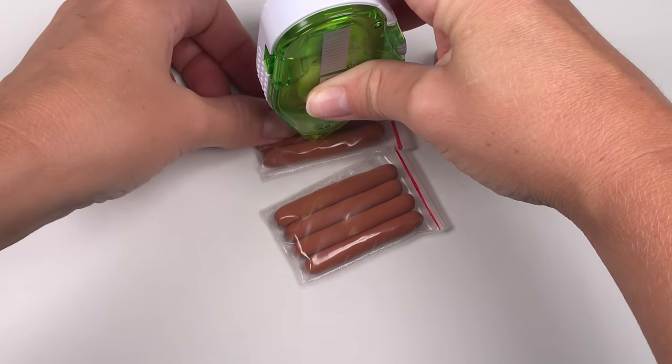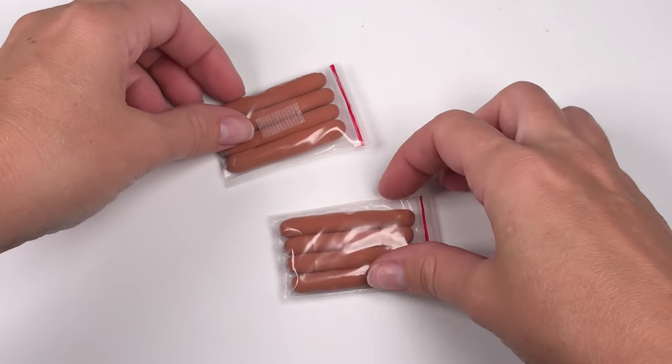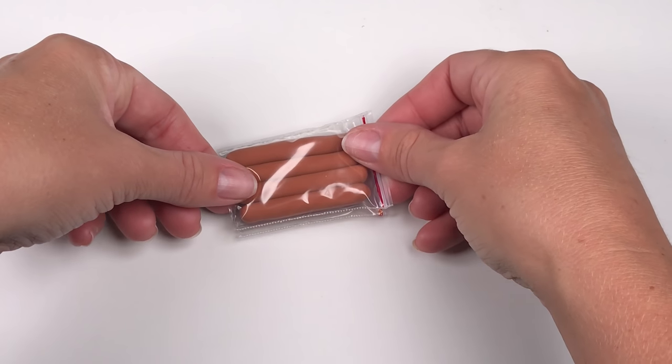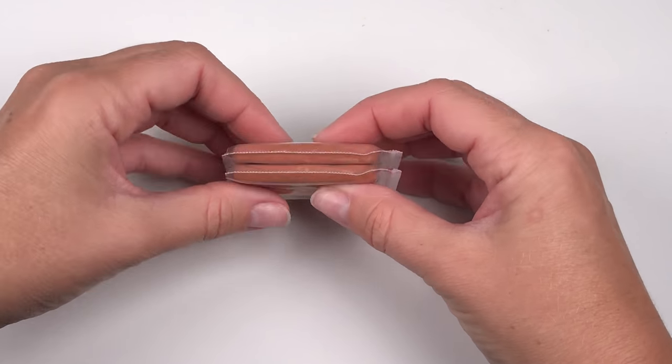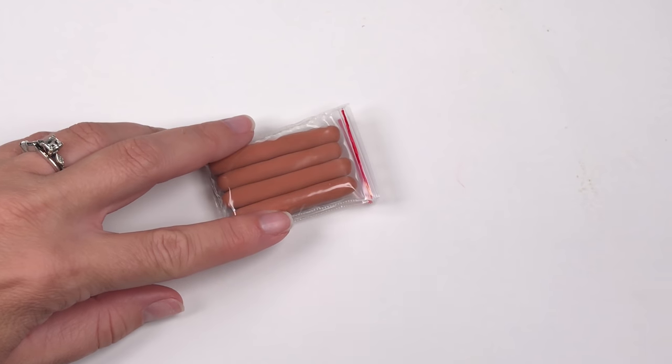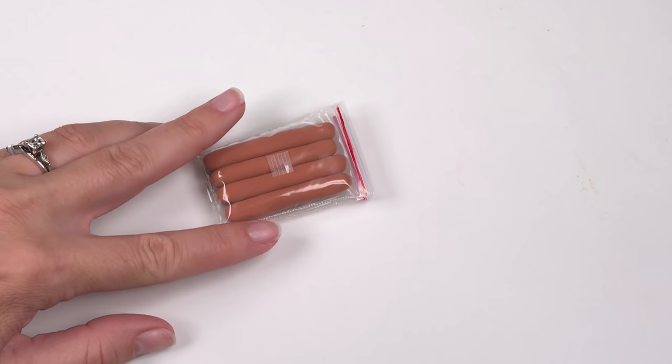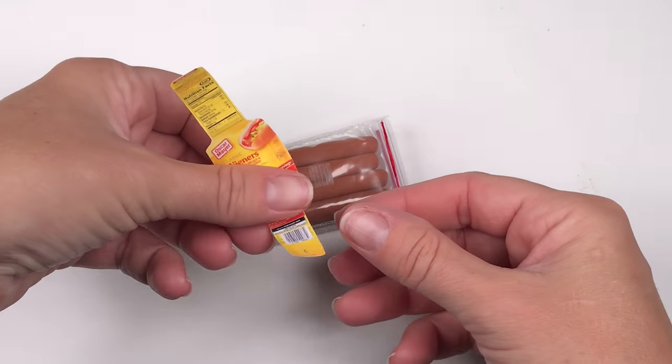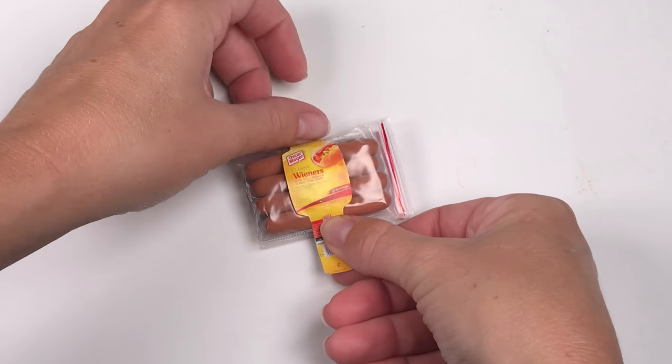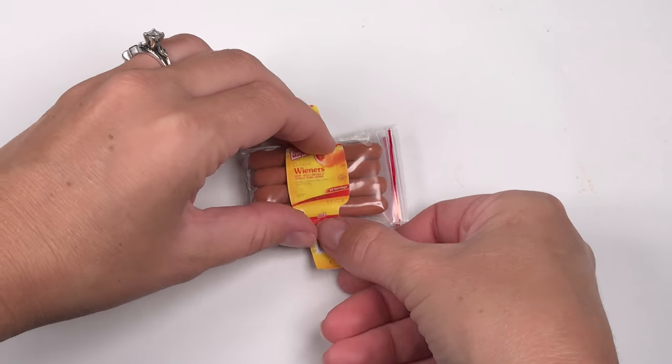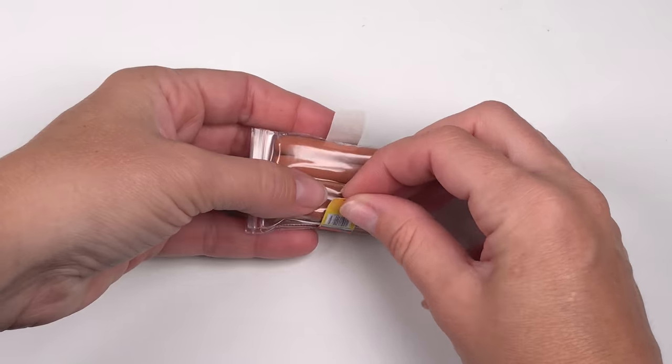Apply double sided tape to one of the hot dog packages so when you stack them they don't slide. This is optional but you can also cover your package with a label. You can find a label in a store circular or you can use the printables found on our blog. Just wrap the label around the hot dogs and your wiener package is complete.